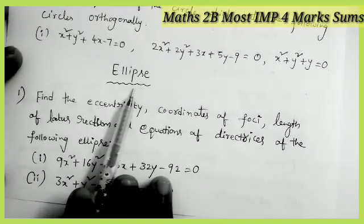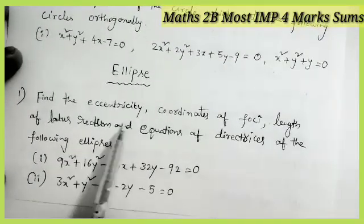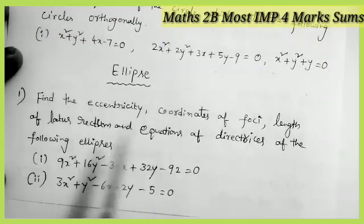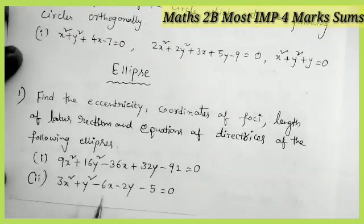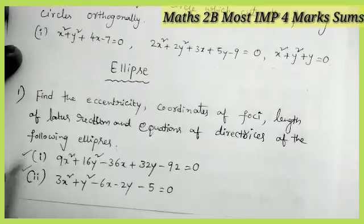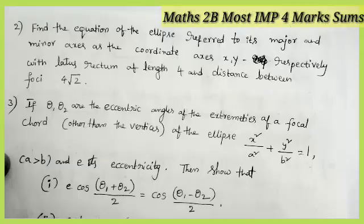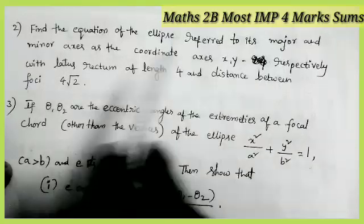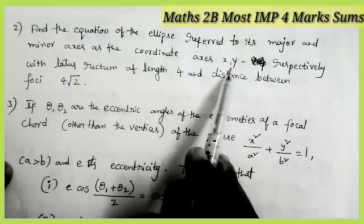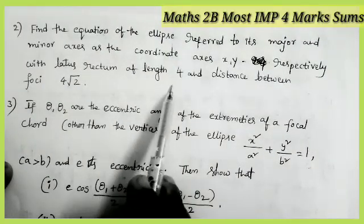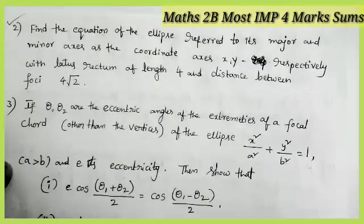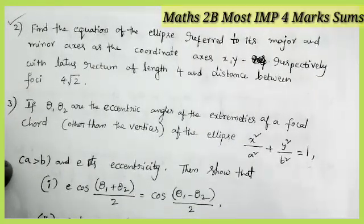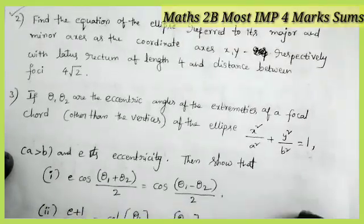First, from the topic ellipse: find the eccentricity, coordinates of the foci, length of the latus rectum, and equations of directrices for the following ellipses — very very important model. Find the equation of the ellipse referred to its major and minor axes as the coordinate axes, with latus rectum of length 4, and distance between the foci equal to 4 root 2 — most important model.